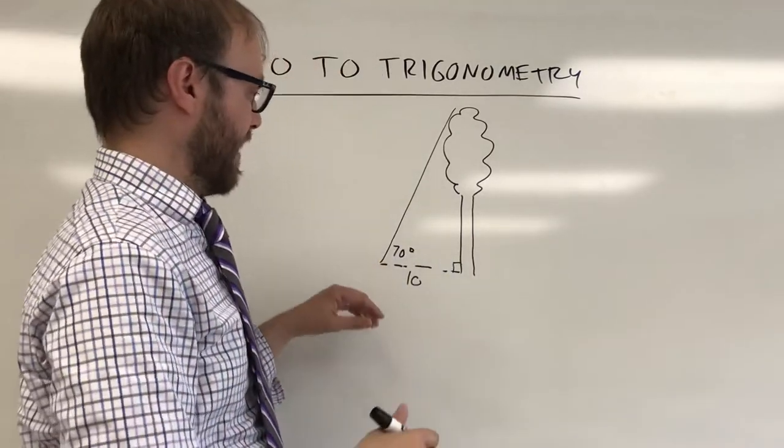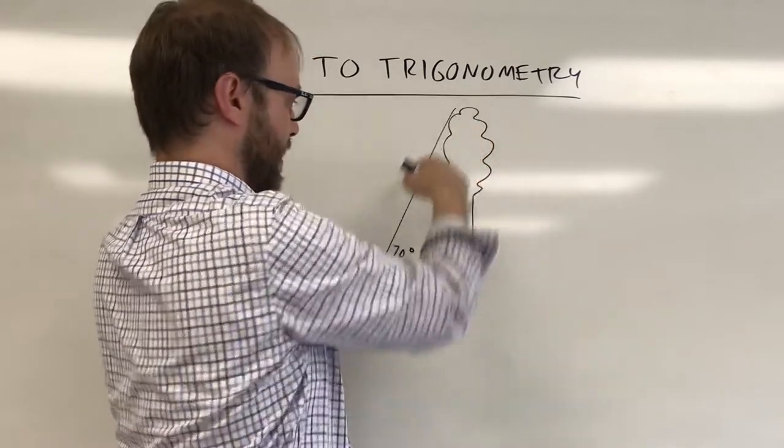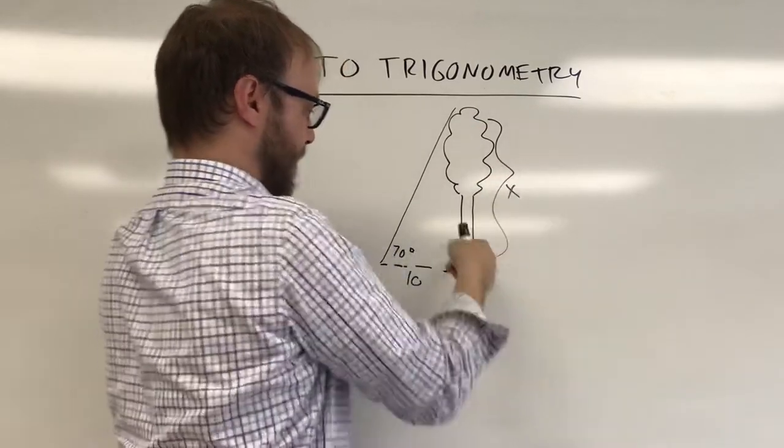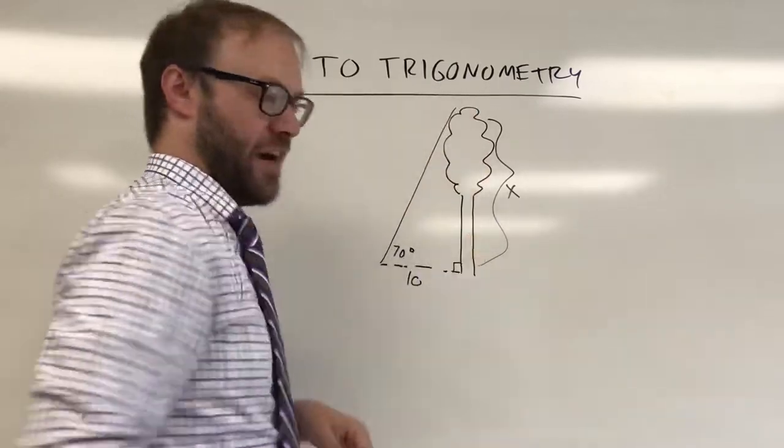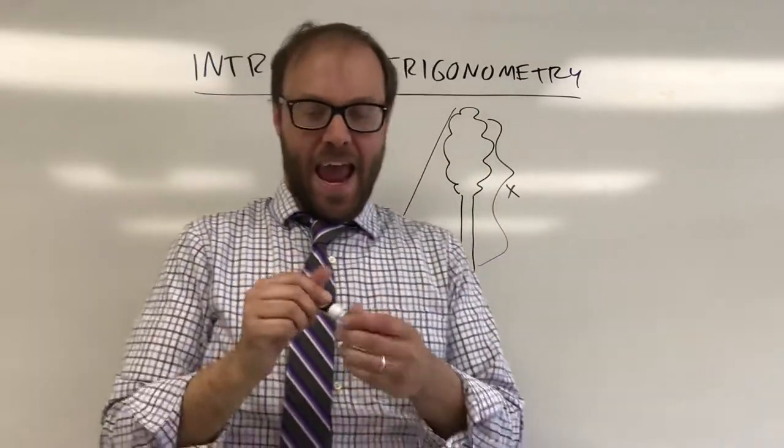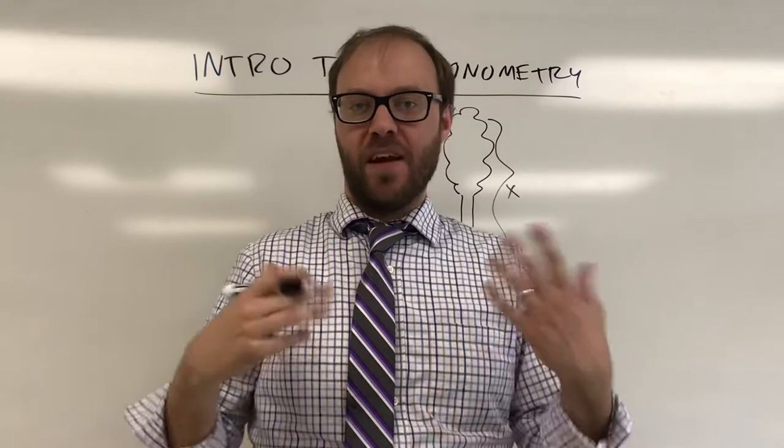So what we really have here is, hopefully everybody sees we have a right triangle here. He wants to know the height of the tree. So he basically wants to know this side of the right triangle. And this is where trigonometry comes into play.